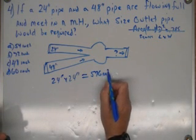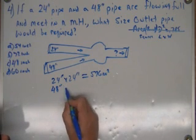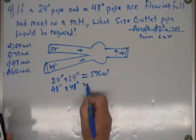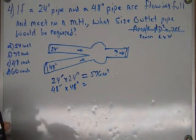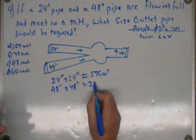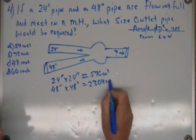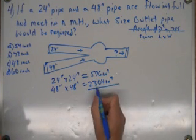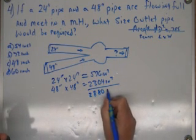48 inches times 48 inches. It's going to be 48 squared. 2304. 2,304 inches squared. And that's going to be 2880 inches squared.